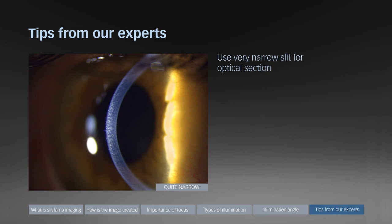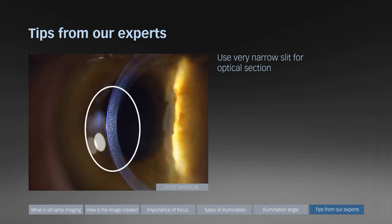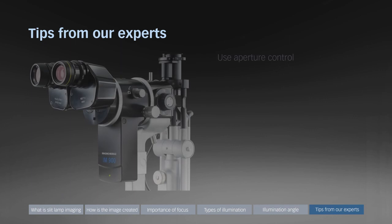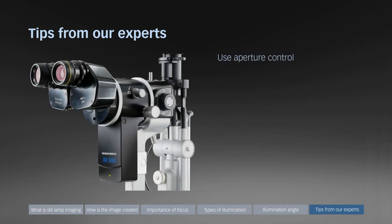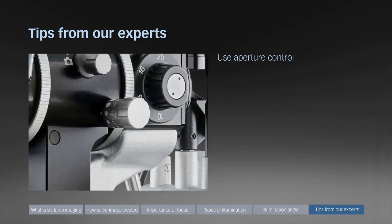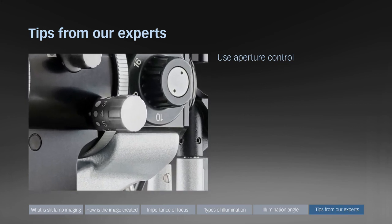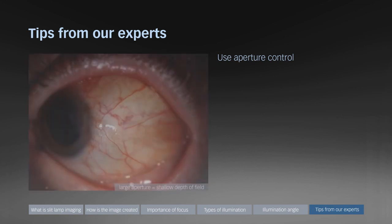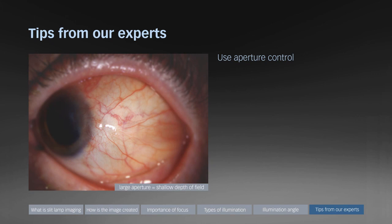Here an example of a quite narrow slit where no detail in the cornea is visible, and here an example of a very narrow slit which reveals the different layers of this healthy cornea. Use aperture control — the Haag-Streit IM900 imaging module provides aperture control. Use a large aperture if little light is available and a small aperture if deep depth of field is required. Here an example of an image with shallow depth of field, and here the same eye with deep depth of field.